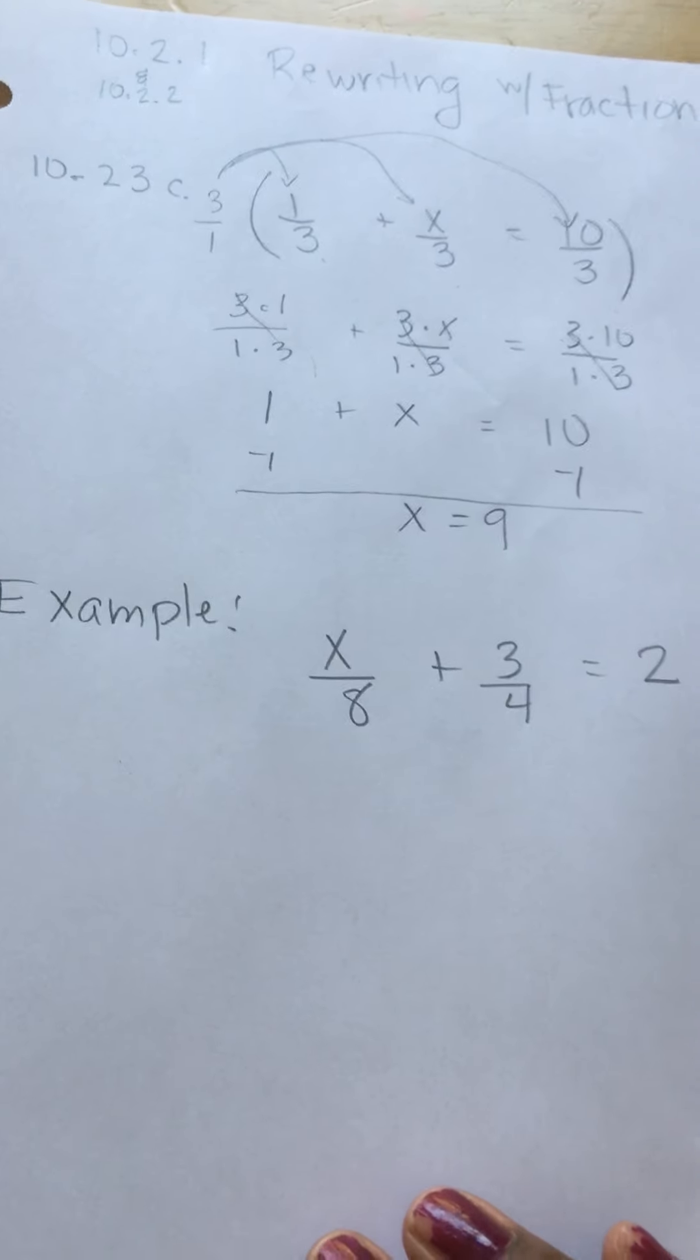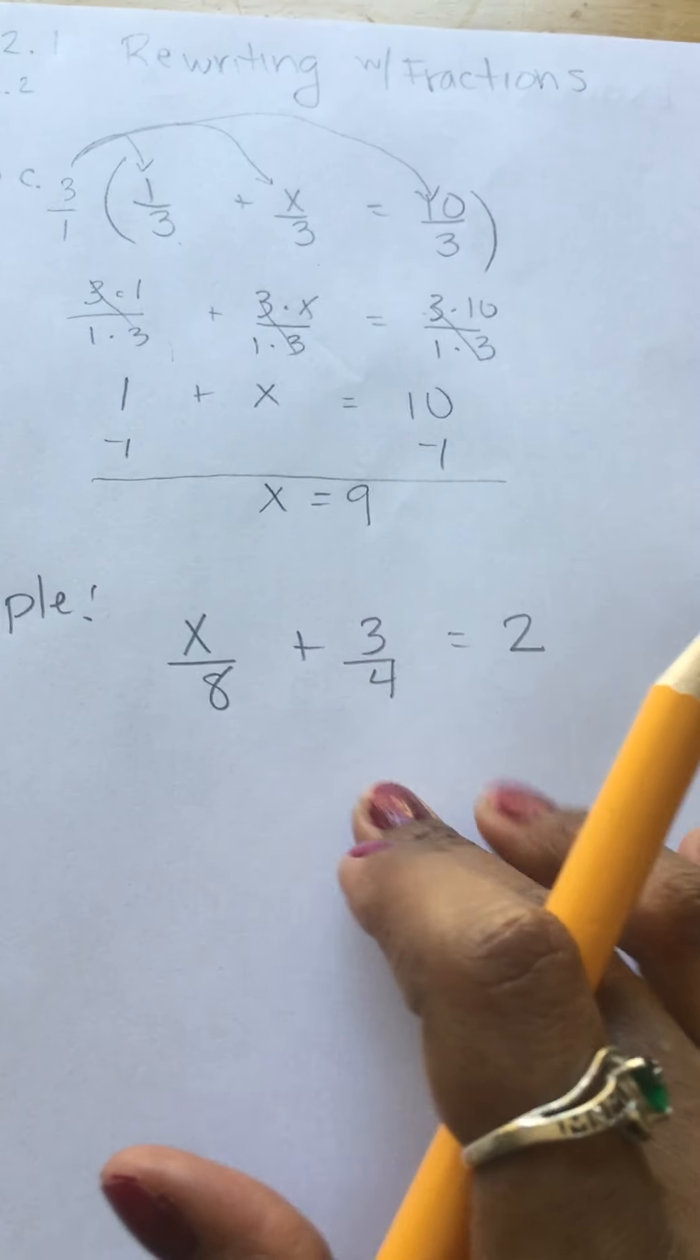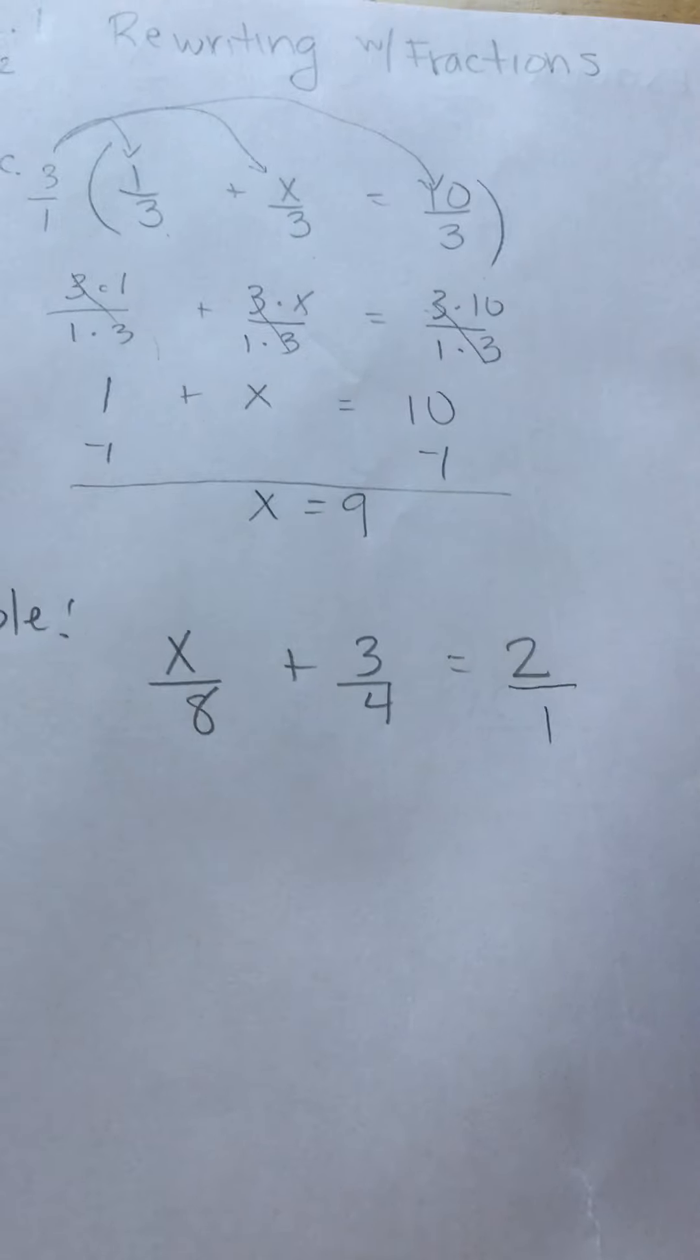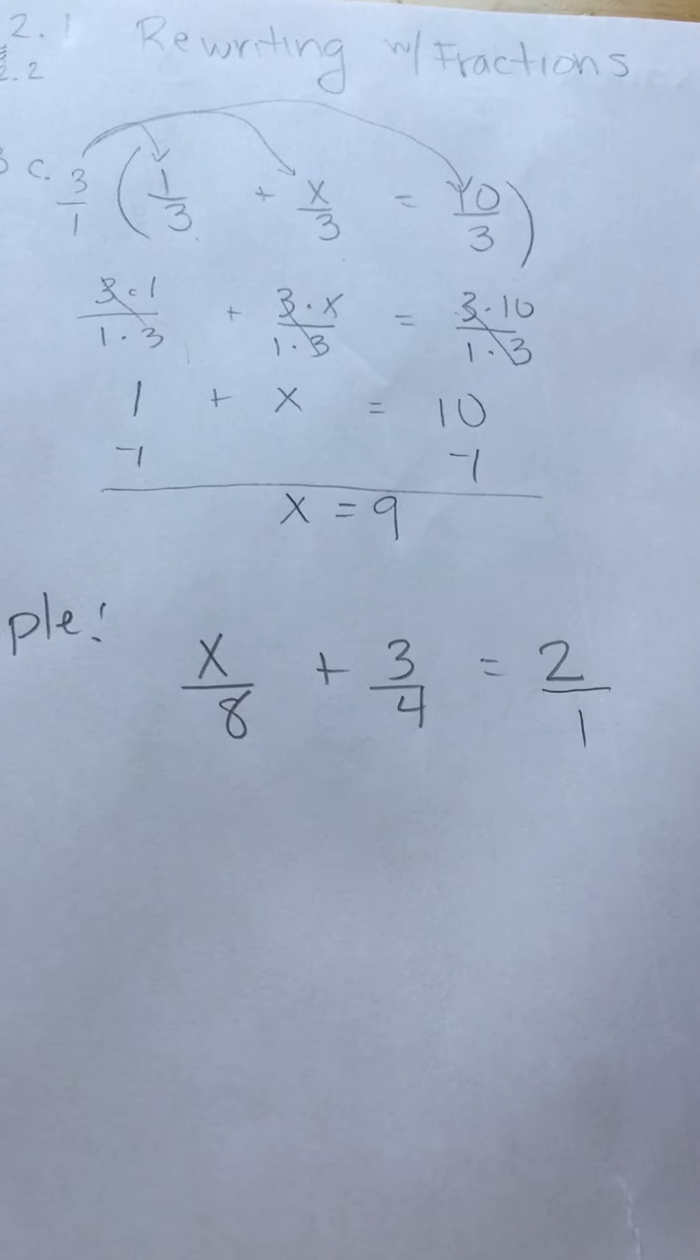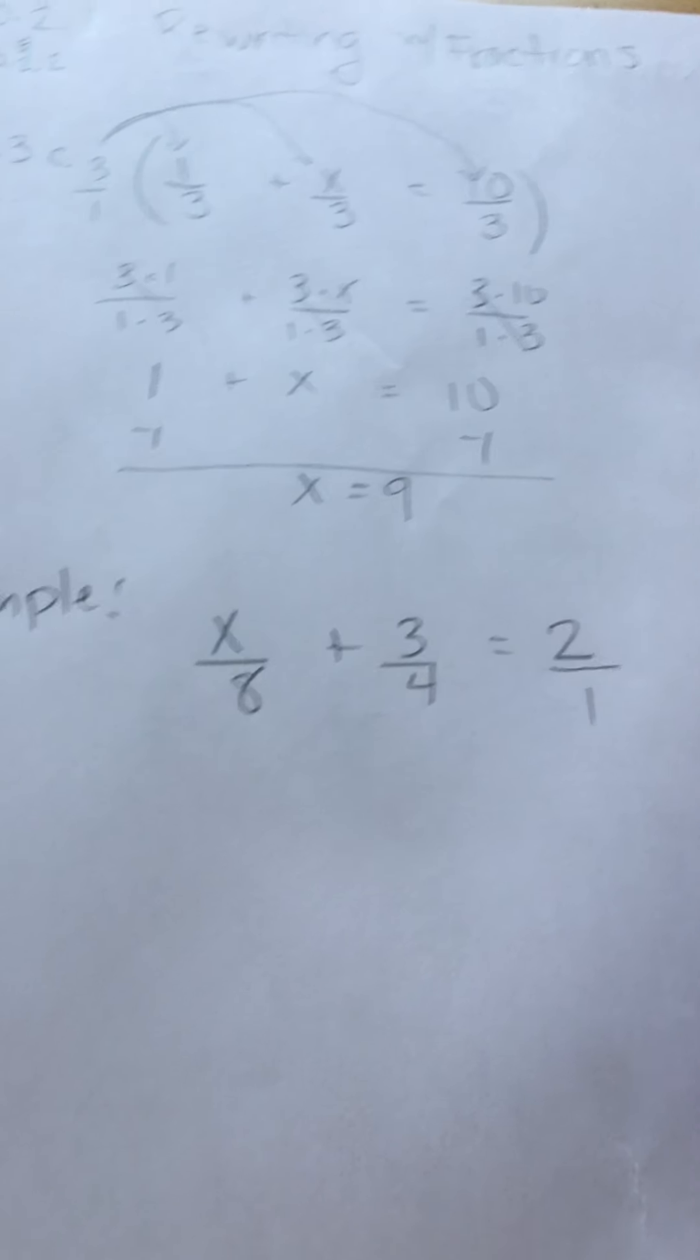Now on this one, we do not have the same denominator. I have x over 8 plus 3 over 4 equals 2. First step, put a 1 under the 2. Now find the number you can multiply everything by and get rid of those fractions. That number is 8.